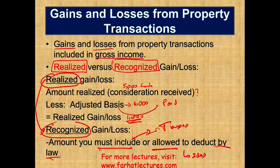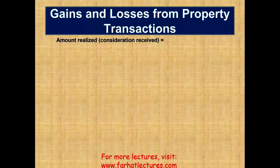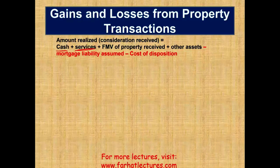Let's talk more about the realized concept — the amount realized. When we said amount realized, we said consideration received. In the prior example, the consideration received was cash. But that's not the only thing you would receive if you sold something. The other individual may provide you a service — you can put a fair market value on that. They might give you property — you'd use the fair market value of that property. They may give you some other asset. All of these are considered consideration received, or amount realized.